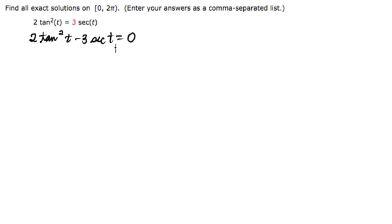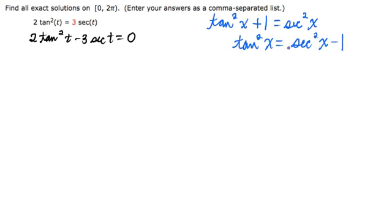However, we can put the tangent squared in terms of secant because if we use the Pythagorean identity which says tangent squared x plus 1 equals secant squared x, we can solve that for tangent squared. So we get tangent squared x is equal to secant squared x minus 1. And that could be helpful because then we would have all secants in our problem and we might possibly be able to factor.